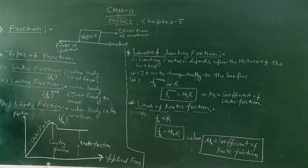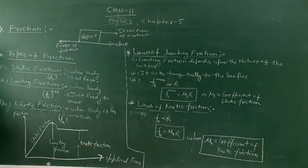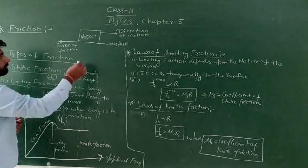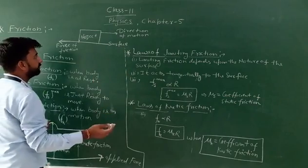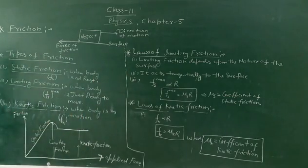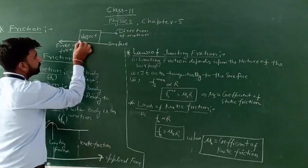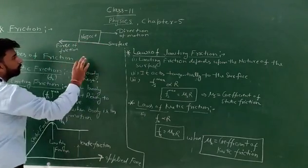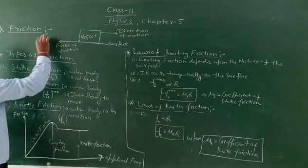Hello friends, in this video we will discuss about friction, types of friction, and some laws of limiting friction. When an object starts moving on a surface or is moving on a surface, a force acts between the contact surfaces. This force opposes the motion of the object on the surface, and this force is known as friction.